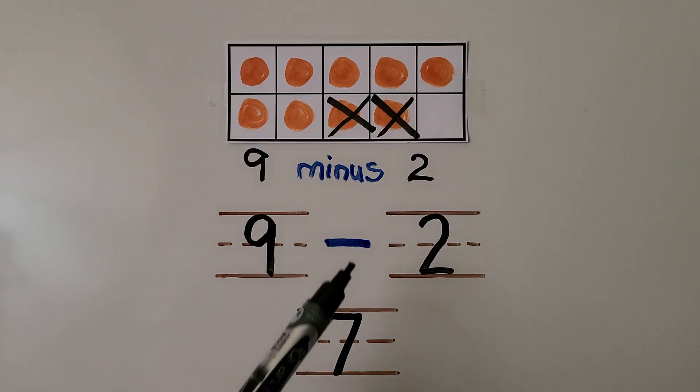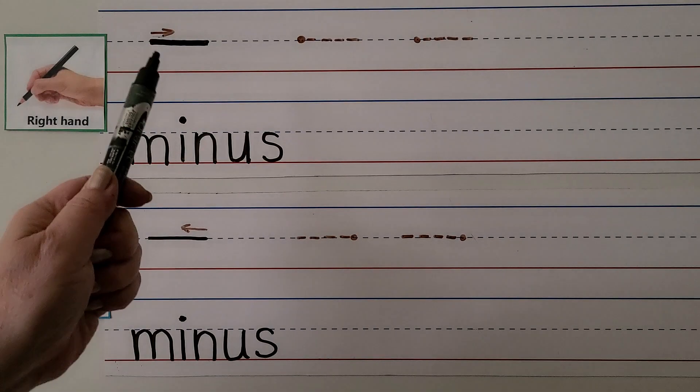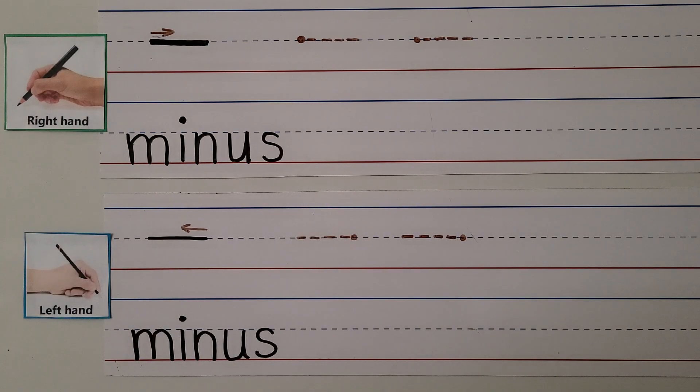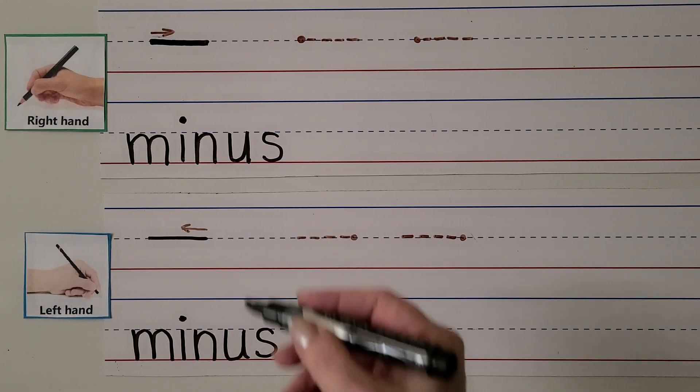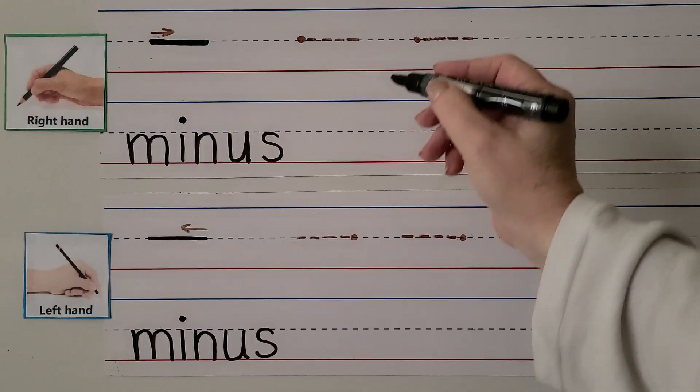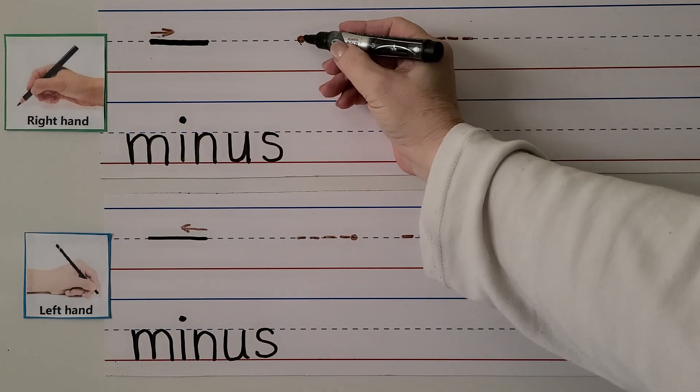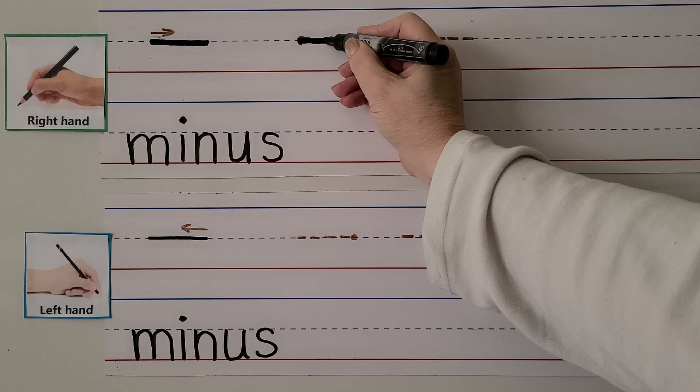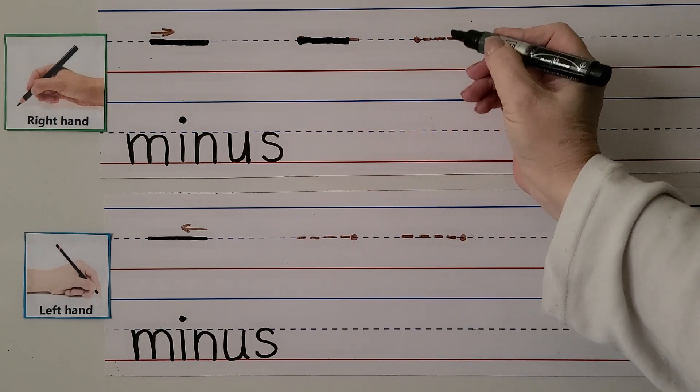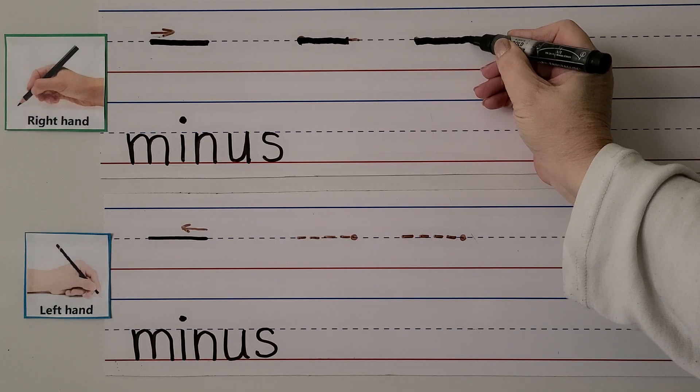Remember the minus symbol means take away. This is a minus symbol. We can write a minus symbol with our right hand. We're going to start on this side and pull the pencil towards our hand. We do it on the dotted line, starting here and pulling the pencil towards our hand.